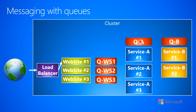We have this queue service A, and a message has been queued up to it, and I have three instances of service A running. When those instances are idle, they periodically go up to the queue service to pull a message out. Let's say that instance three was the first one to go to the queue service and say, I'm ready to process a message — it's doing that because it's idle and not doing other work. So we get great load balancing across these three instances by having them all go to the queue service to pull messages out. Instance three goes and gets that message from queue A and starts doing some processing.